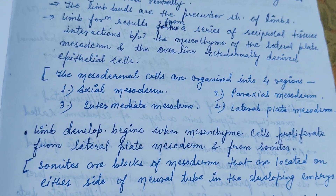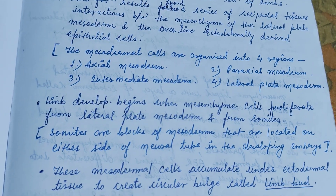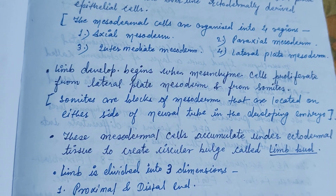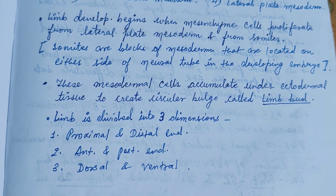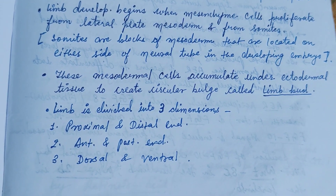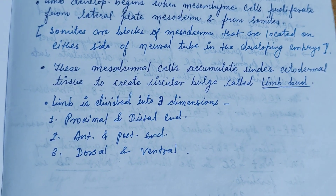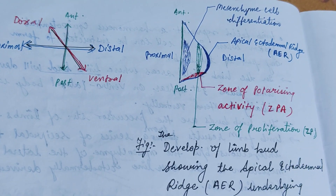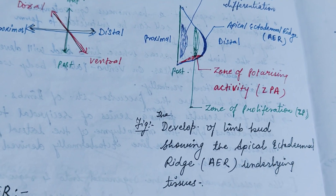The mesodermal cells are organized into four regions: axial mesoderm, paraxial mesoderm, intermediate mesoderm, and lateral plate mesoderm. Limb development begins when mesenchyme cells proliferate from the lateral plate mesoderm and from somites. These mesodermal cells accumulate under ectodermal tissues to create a circular bulge called the limb bud. The limb is divided into three dimensions: proximal and distal, anterior and posterior, and dorsal and ventral.